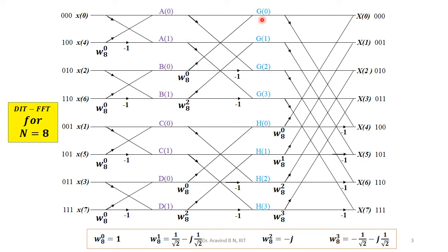Getting into the second stage: G[0] is given by A[0] plus B[0] times Ω₈^0. G[1] is given by A[1] plus B[1] times Ω₈^2. G[2] is given by A[0] minus B[0] times Ω₈^0. G[3] is given by A[1] minus B[1] times Ω₈^2. Similarly we can represent the H values in the same manner for the second stage of calculation.